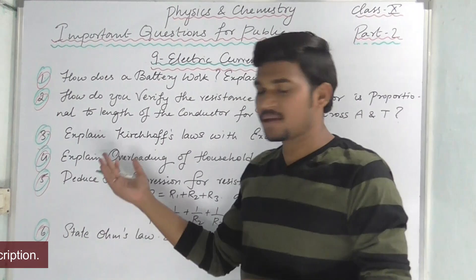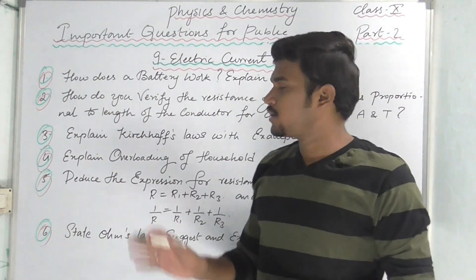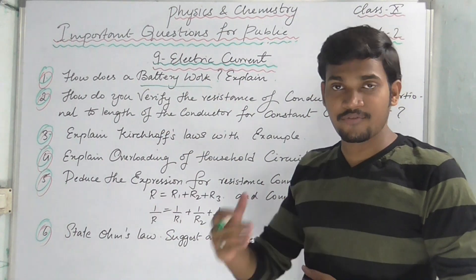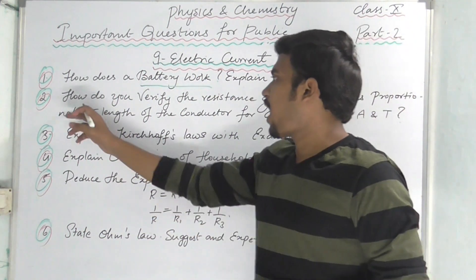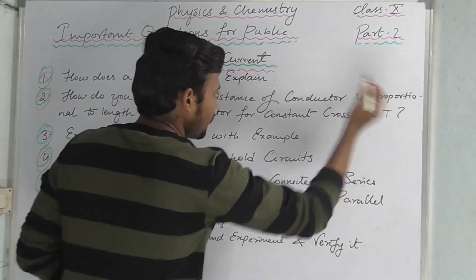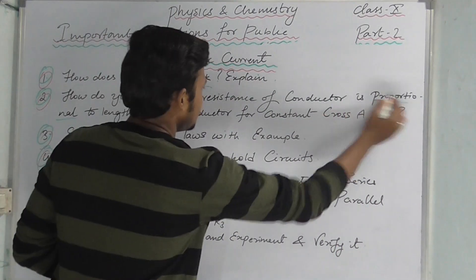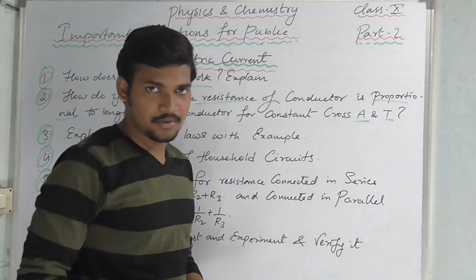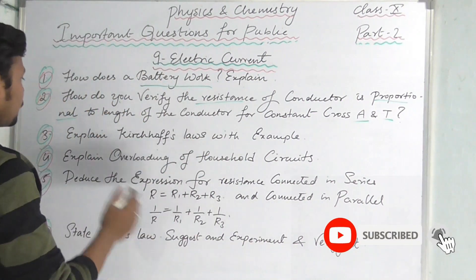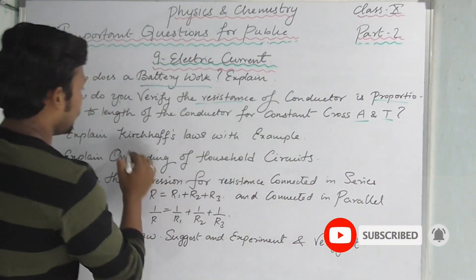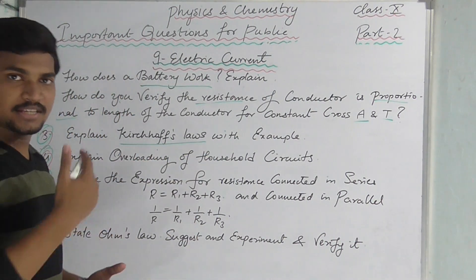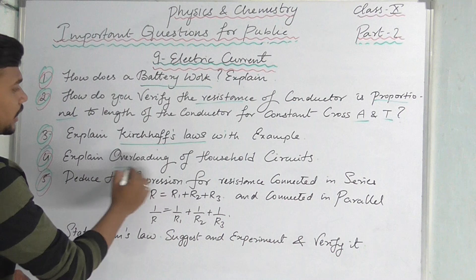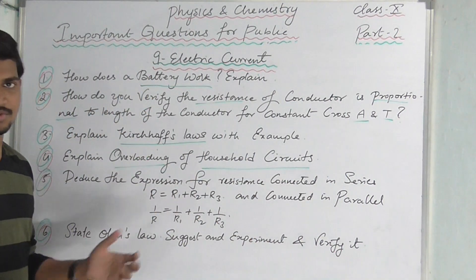The next chapter is Electric Current. In the previous chapter there were 4 to 6 questions. How does a battery work? Explain. How do you verify that the resistance of a conductor is proportional to its length, for constant cross-sectional area and temperature? Explain Kirchhoff's Laws with an example — both the loop rule and the junction rule, with one example each. Explain overloading of household circuits — this is a very important question.